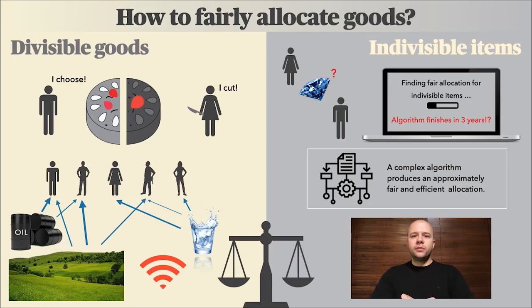Fairness is one of the main principles society is based upon. Legally, we devise punishments for our mischiefs, while informally we believe that each one of us should be rewarded and praised as deserved. Obviously, achieving fairness is challenging, but at least for fairer allocations we can use math.